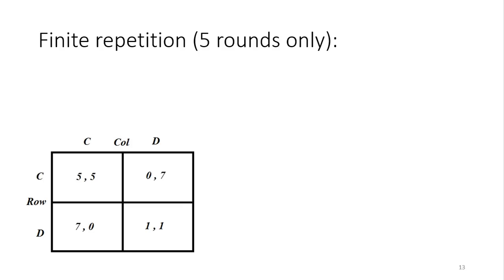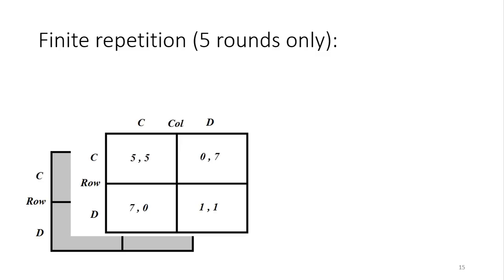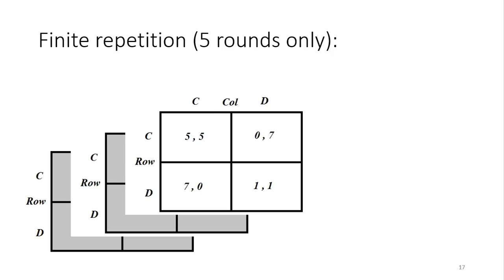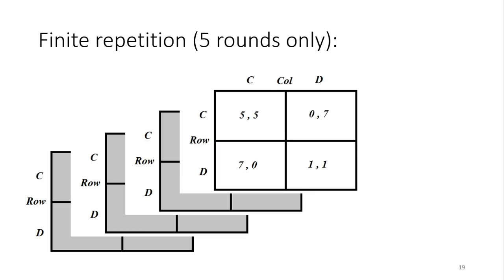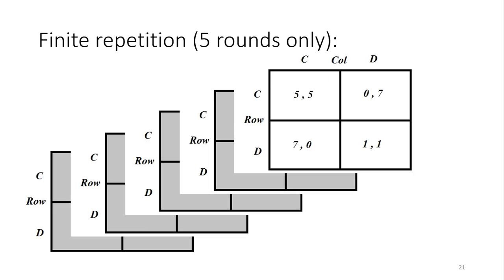Here's how it works. We play round one — row and column each choose a strategy, picking one of the four boxes, and they get their payoffs. That round is set in stone; they can't go back. Then round two: same thing, row and column choose strategies, collect payoffs, and round two is set in stone. They go to round three, play it, outcome is determined. Round four same thing. And then last but not least, they play the final round at round five, choose their strategies, and get the payoff accordingly. Their total payoff is just the sum of all payoffs collected across each round.